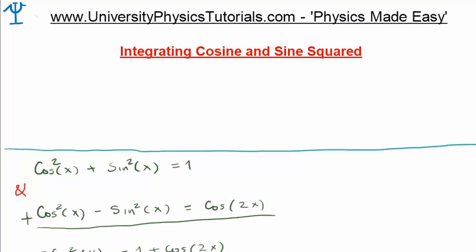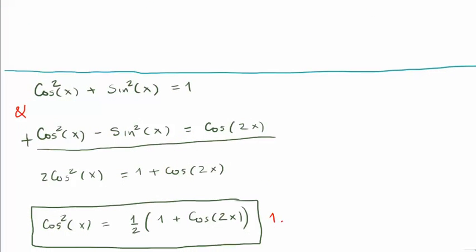If we add the two of these equations and rearrange we see that cosine squared x is 1 half outside of 1 plus cos 2x. I'm going to call that equation number 1.